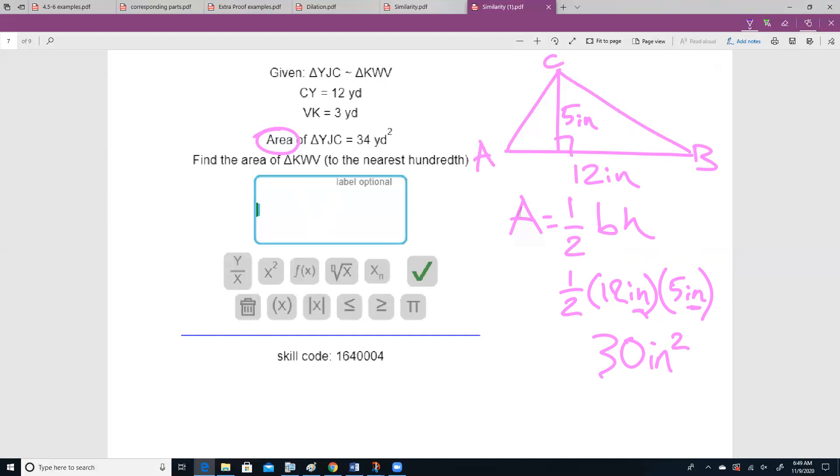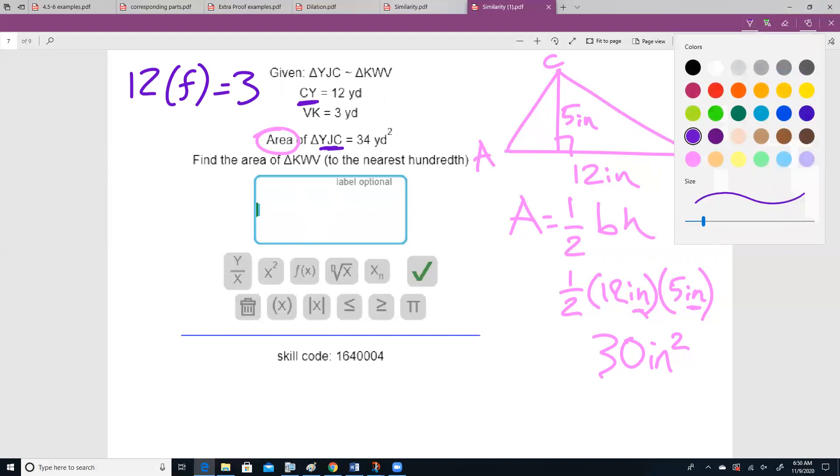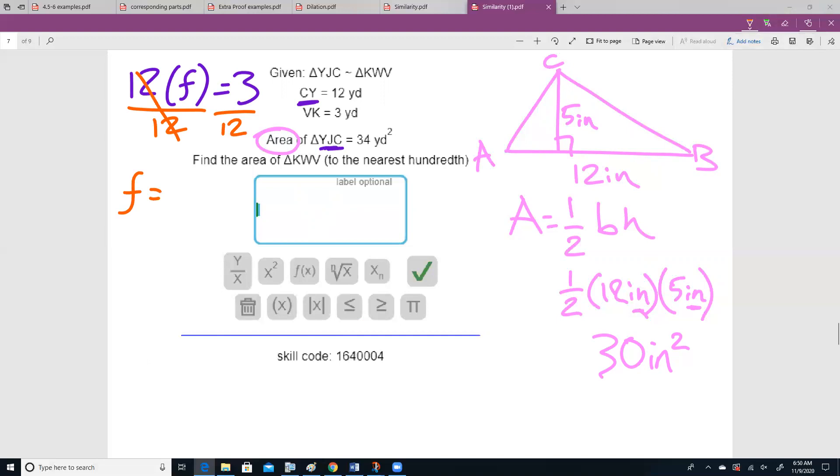We know the area of yjc, which corresponds to the side cy. So we're going to go from cy, we're going to go from 12, multiplied by some scale factor, and we're going to get 3. If we want to solve for that scale factor, let's divide by 12, and our scale factor is going to be one-fourth. So if I multiply 34 by one-fourth squared, because area is squared, and we have my answer, and that's going to give me 2.125.